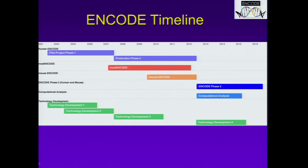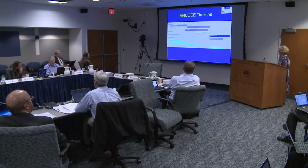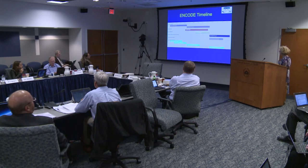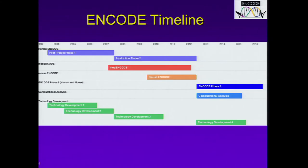In 2009, with the availability of some economic stimulus funding—the ARRA money—we launched a small effort in mouse ENCODE. These projects ended in 2012, when we started ENCODE phase three, which we're about halfway through now. We focused on expanding the catalog in the human and mouse genomes, and we added some computational analysis programs as well. We felt it was important to expand the expertise in computational analysis to best make use of the ENCODE resource. At that time, we funded the fourth technology development initiative as well.